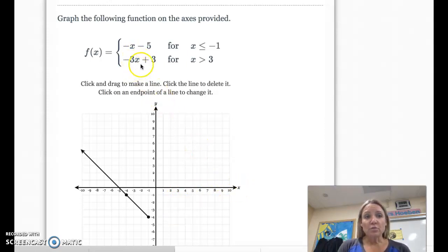And if we plug the 3 in there, we have negative 3 times 3, which is negative 9. Negative 9 plus 3 is negative 6. So at 3, we're going to start at negative 6, and the slope is negative 3 over 1.